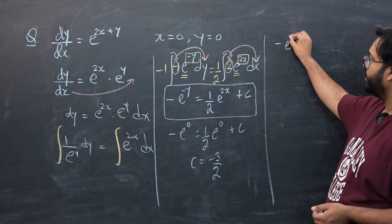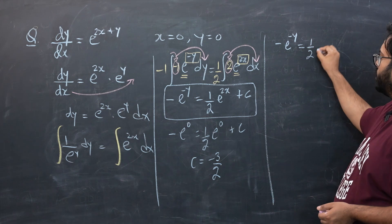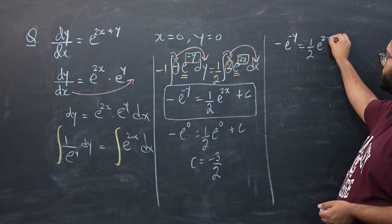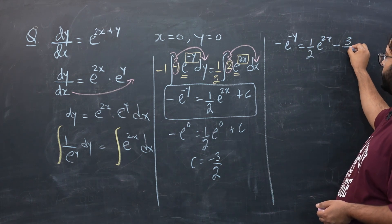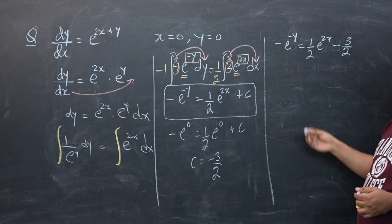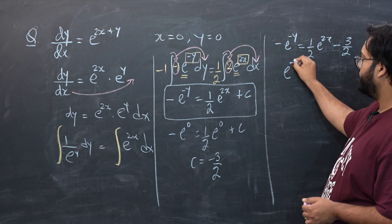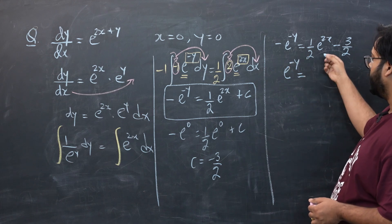Minus e raised to power minus y is equal to 1 by 2 e raised to power 2x minus 3 by 2. Now let's take this minus over here and multiply, so this will become e raised to power minus y is equal to 3 by 2 minus 1 by 2 e raised to power 2x.